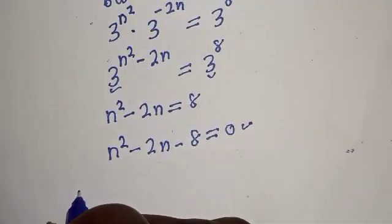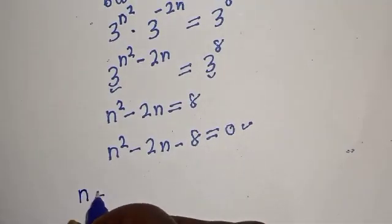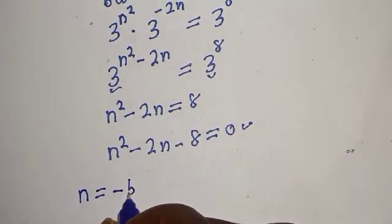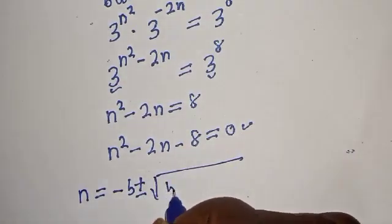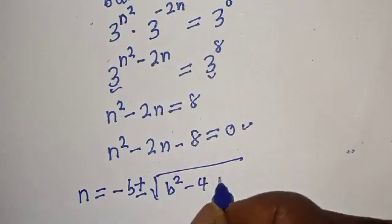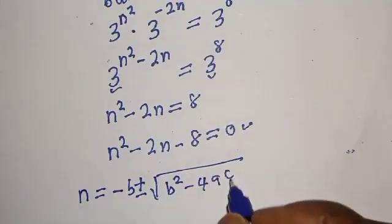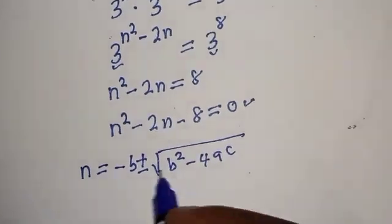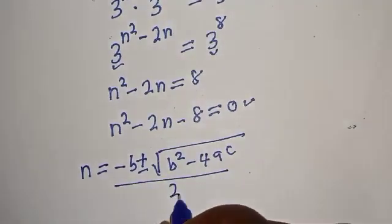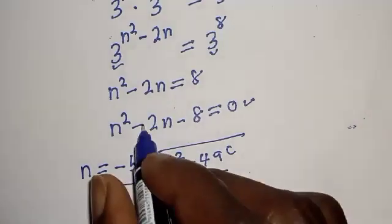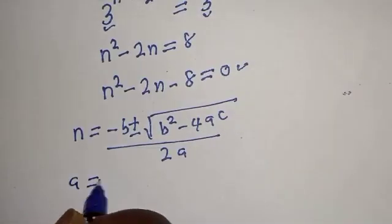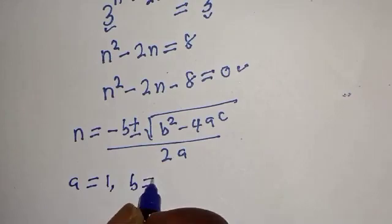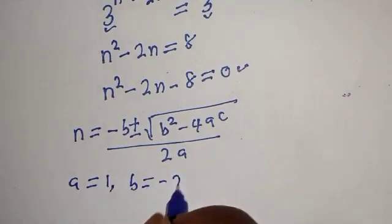Our quadratic general formula is: n equals minus b, plus or minus square root of b squared minus 4ac, all over 2a. From this equation, a is equal to 1, b is equal to minus 2, and c is equal to minus 8.